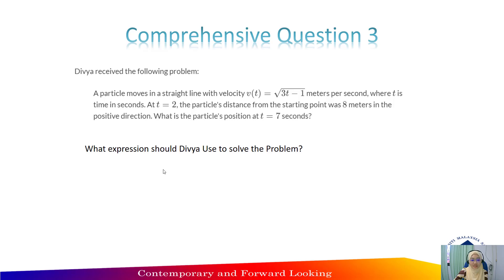Next, we will discuss comprehensive question 3. DVI received the following problem: a particle moved in a straight line with velocity V(t) equal to square root of 3t minus 1 meters per second, where t is time in seconds. At t equal to 2, the particle's distance from the starting point was at meters in the positive direction. What is the particle's position at t equal to 7 seconds?